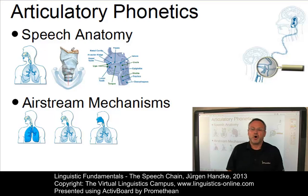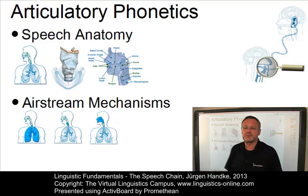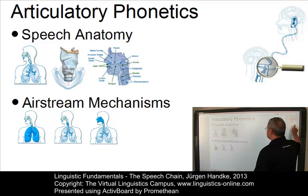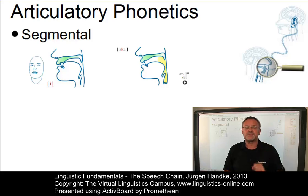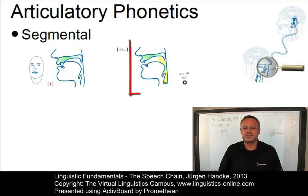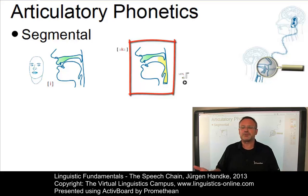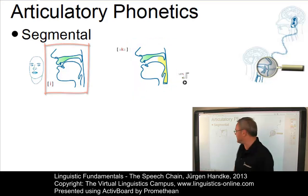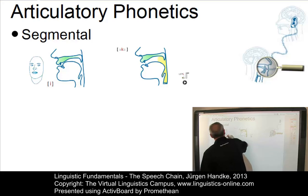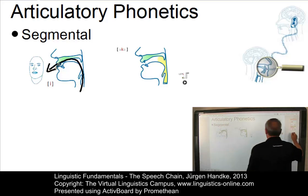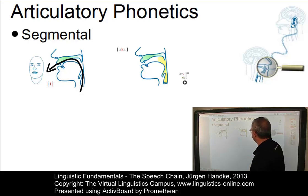The combination of anatomical properties and the respective airstream allows us to precisely define all speech sounds, or so-called segments, that are used in natural language, where two types of sound can be differentiated: vowels and consonants. Whereas consonants are produced with some kind of obstruction in the vocal tract, vowels allow an almost free passage of air.